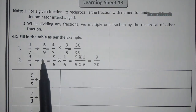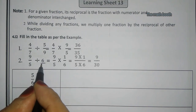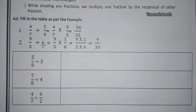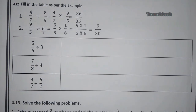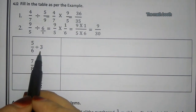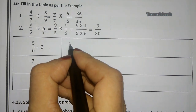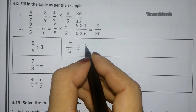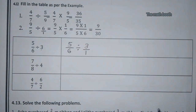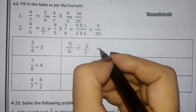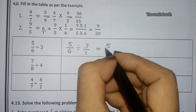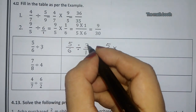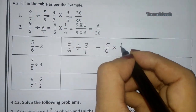Next example: 9/5 divided by 6. Here 6 is nothing but 6/1, so its reciprocal becomes 1/6. Similarly, 5/6 divided by 3 — here 3 means 3/1, so we keep 5/6 as it is, the divide becomes multiply, and 3/1 becomes 1/3.